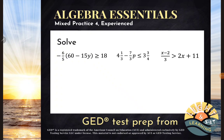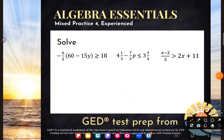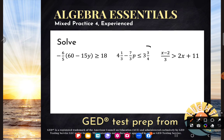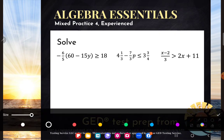Now let's look at the second example: 4 and 1 thirds minus 7 thirds p is less than or equal to 3 and 3 fourths. If you examine the left-hand side, there's nothing I can do to simplify — I can't do that subtraction because they're not like terms. Fraction or not, a plain old number — we call those constant terms — and a variable term, in this case a p term, are not like and are not going to combine. And the right-hand side is just one number — nothing to simplify. So I'm going to get right into the solving.